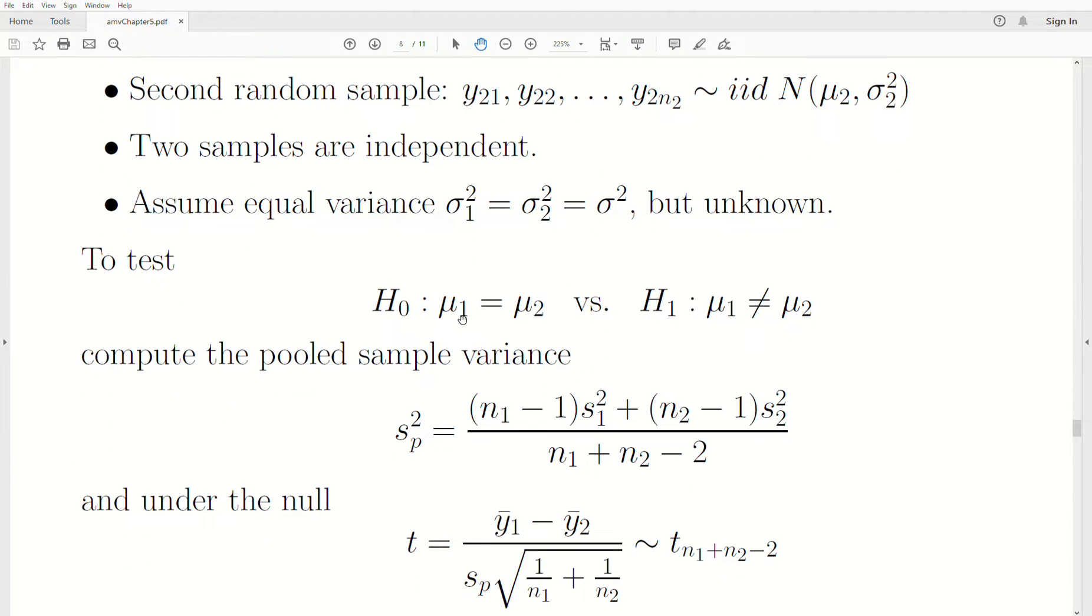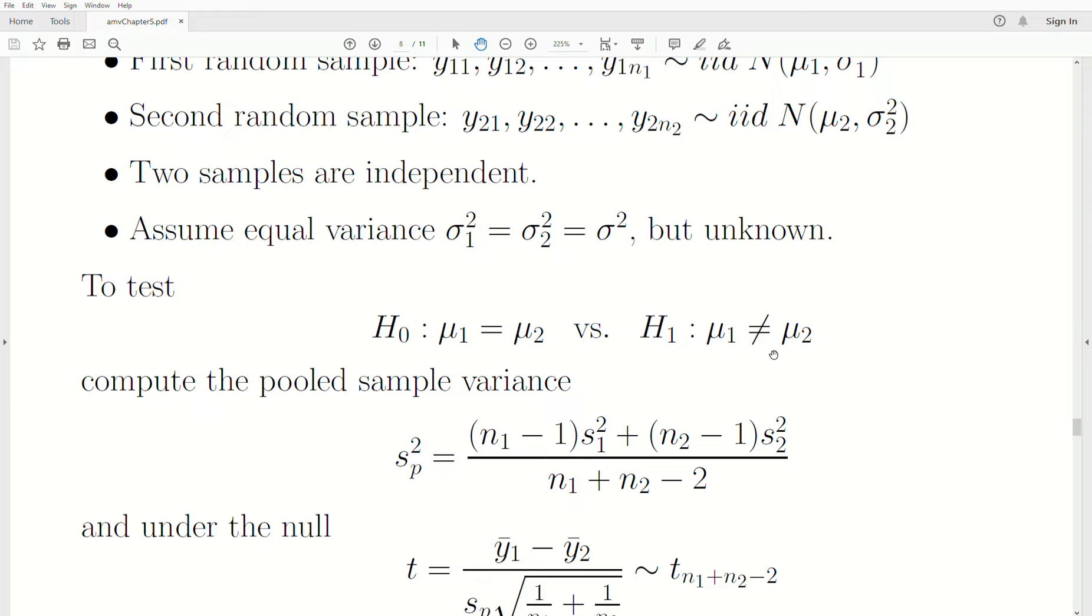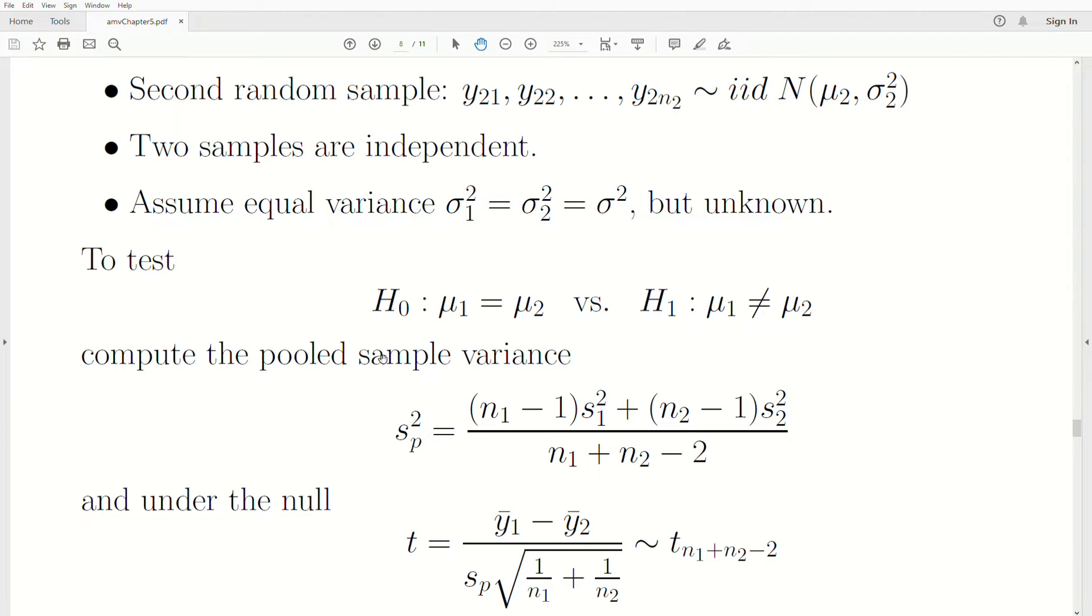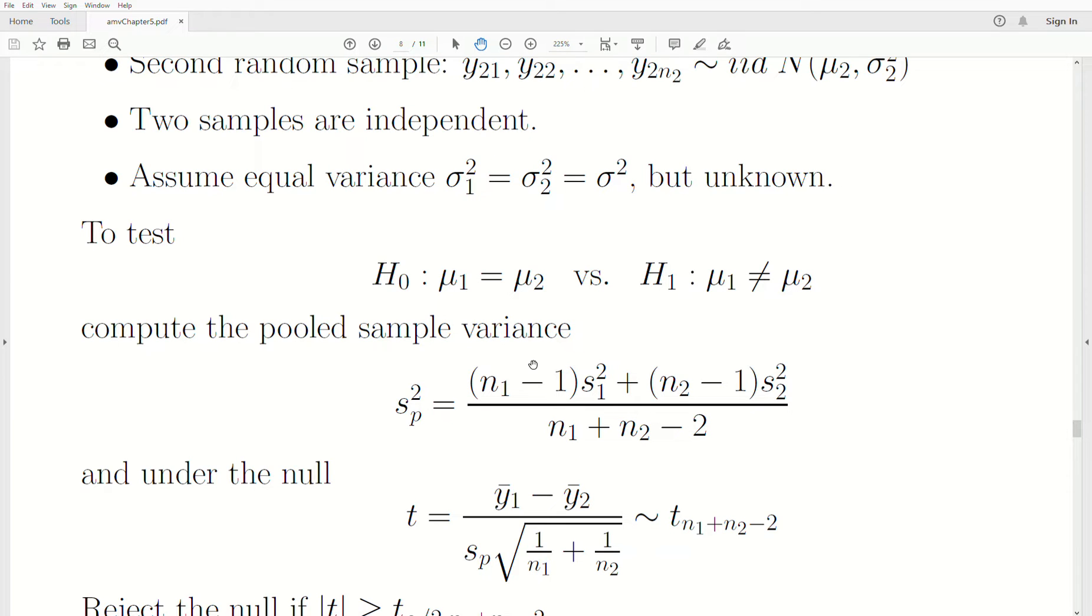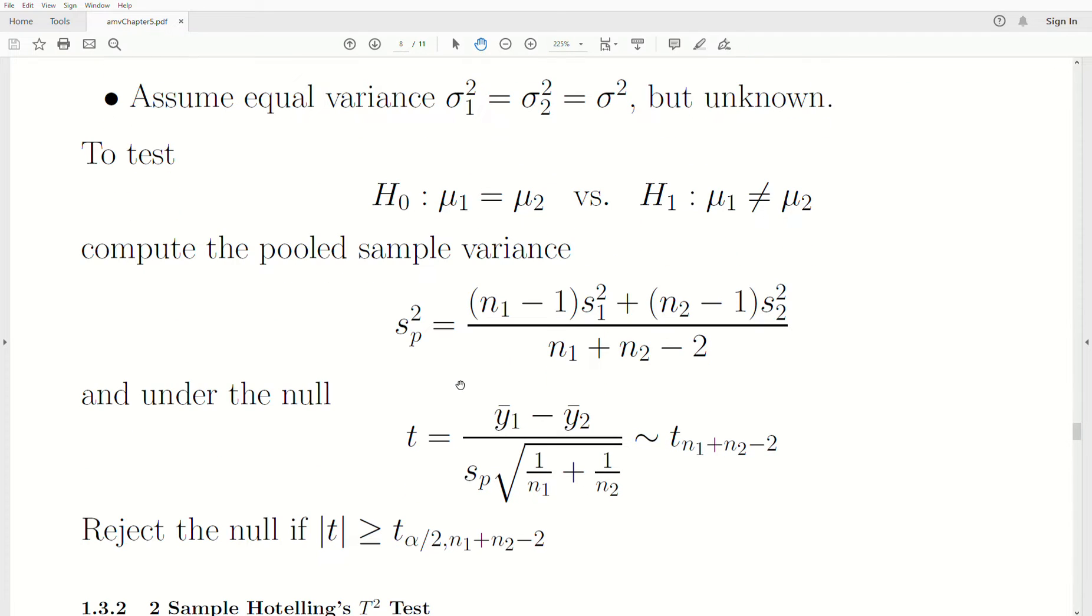We assume that they have constant variance or equal variance but unknown. We want to test are the two population means equal or are they different? To do this, we compute a pooled sample variance. We divide by N1 plus N2 minus 2 to create an unbiased estimate for σ.